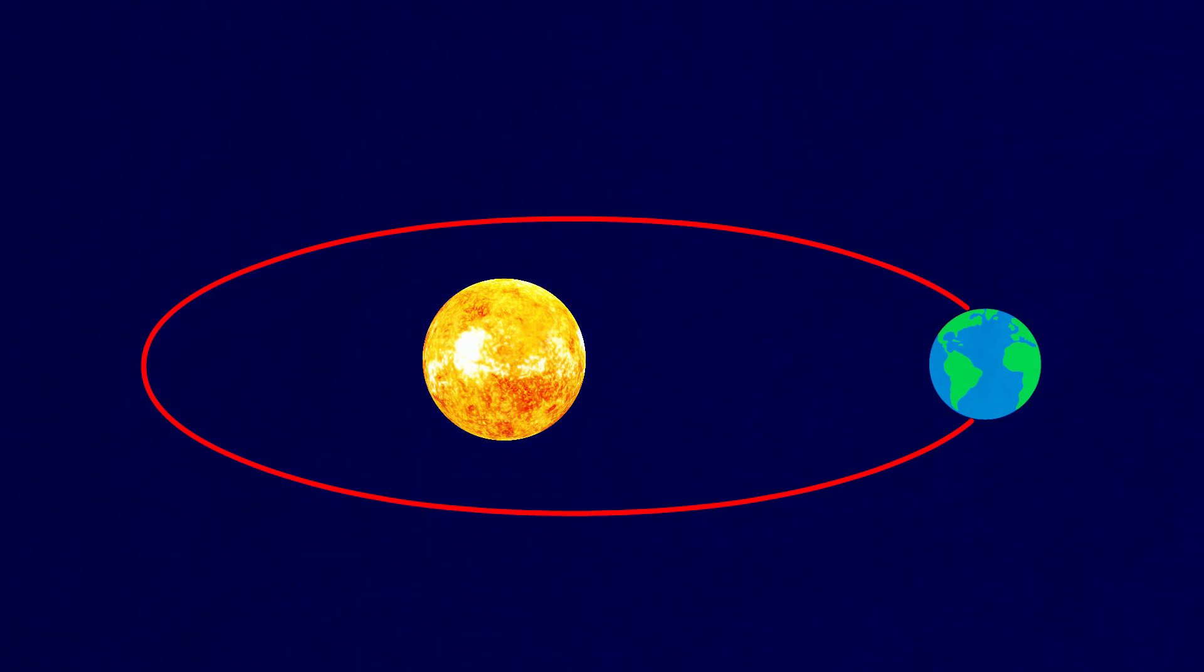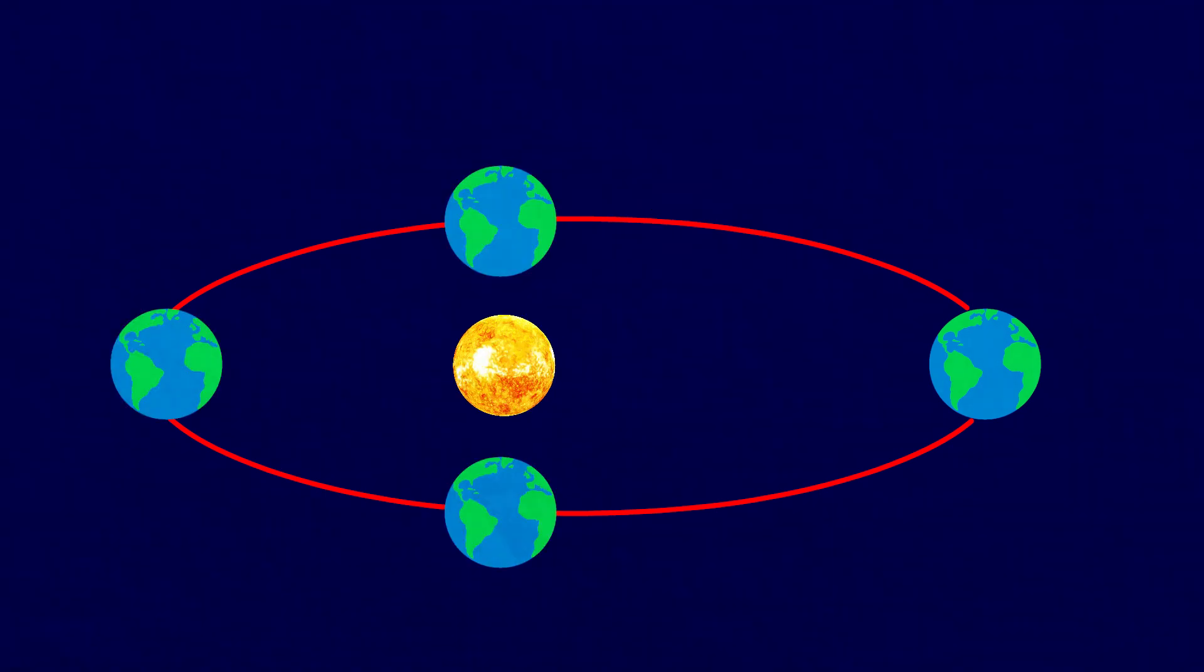From the figure it is clear that the earth is going around the sun in an elliptical orbit. Notice that throughout its orbit, the earth is inclined in the same direction.